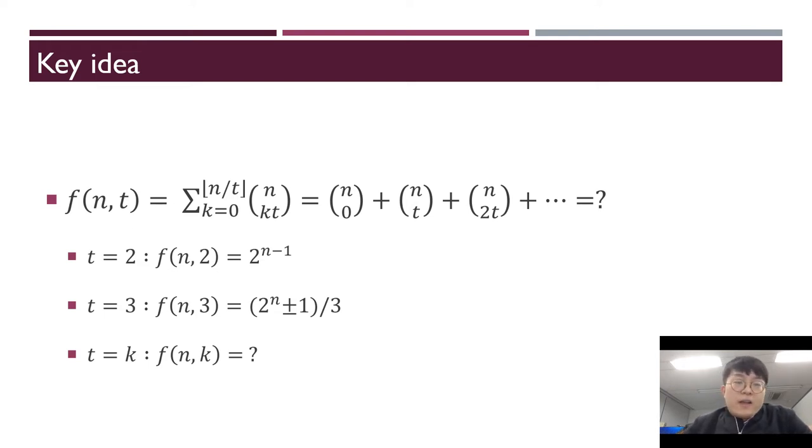Our key idea is sum of combinations. We define f which takes input n and t, and it sums the combinations skipped by t. When t is 2 or 3, we can easily compute the value. Then how about general t?